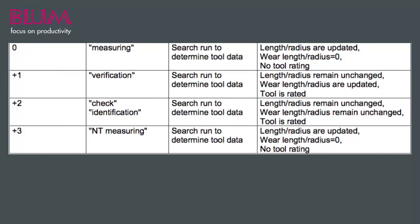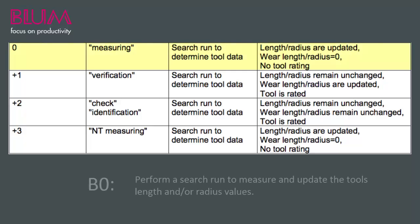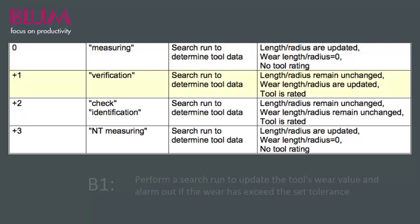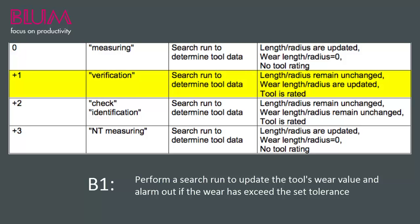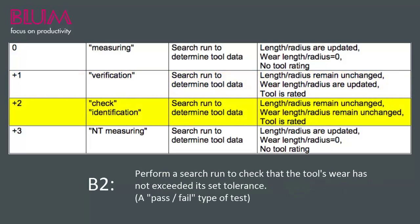Looking at the positive B modes in the manual, we see that B0 will instruct a search run measurement of the tool and update the tool's length and/or radius dimensions. B1 will instruct a search run measurement of the tool and update the tool's wear dimensions, and alarm if it surpasses its set tolerances. B2 will instruct a search run measurement of the tool and check to see if the tool has exceeded its wear tolerance — another pass-fail type of test.